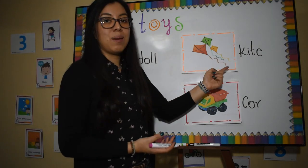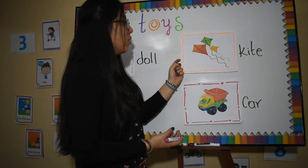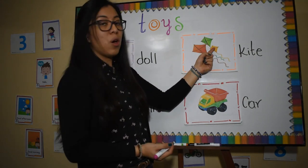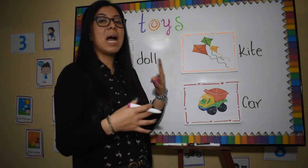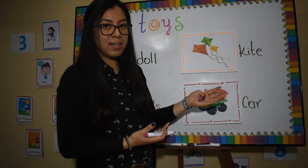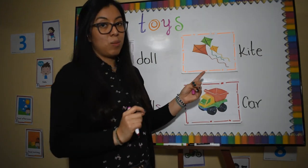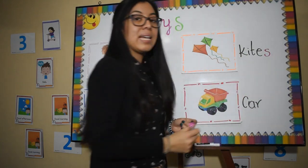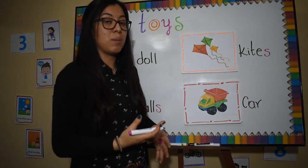La tercera: tenemos unas cartas, ¿cierto? Vamos a contarlas: one, two, three. Entonces, como tenemos varias cometas, ¿ustedes qué creen? ¿Le vamos a agregar S o la vamos a dejar así? Le vamos a agregar S — kites. Estamos hablando en plural, estamos hablando de varias.